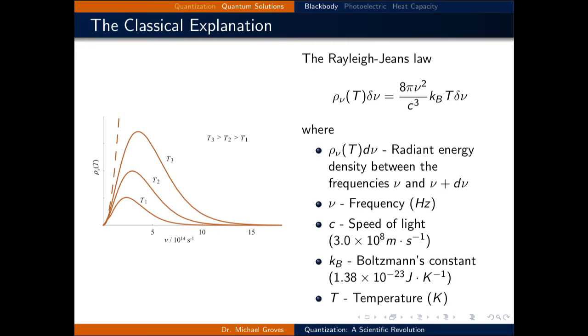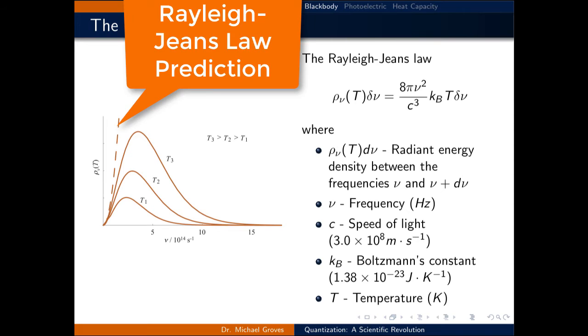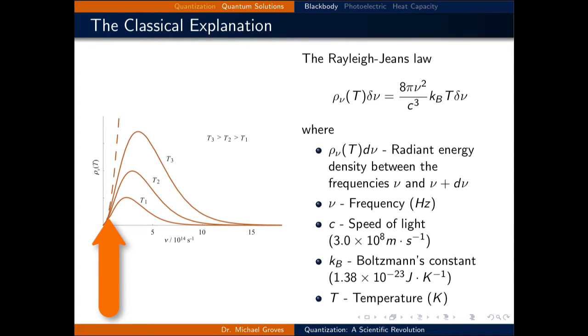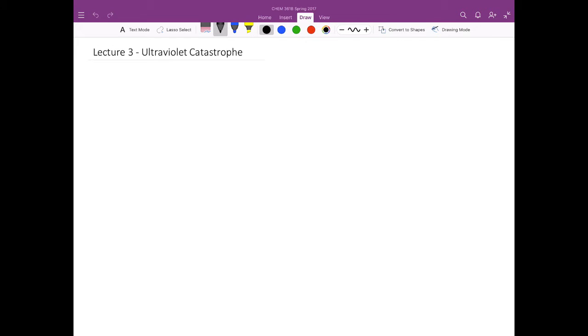Now, the classical explanation for blackbodies is expressed as the Rayleigh-Jeans law. It is a law that was consistent with the physics of the time. However, it did a very poor job at reproducing the radiant energy density of blackbodies. In the plot on the left, the three curves labeled T1, T2, and T3 are experimentally measured curves for the radiant energy density at those three temperatures. The Rayleigh-Jeans law is the dashed curve. It does a reasonable job at low frequencies, but diverges as the frequency moves past the ultraviolet region of the spectrum.